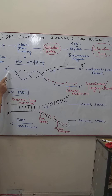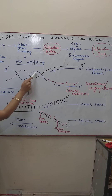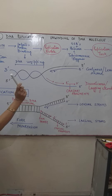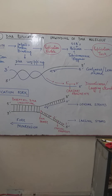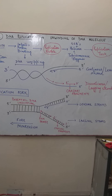The other parental strand has a polarity of 3' to 5', represented in blue here. On this strand, DNA fragments are produced that are not continuous — these are known as Okazaki fragments. The direction of synthesis of these Okazaki fragments is 5' to 3', because the parental template strand is 3' to 5'. Okazaki fragments, named after the scientist, are short pieces of DNA.